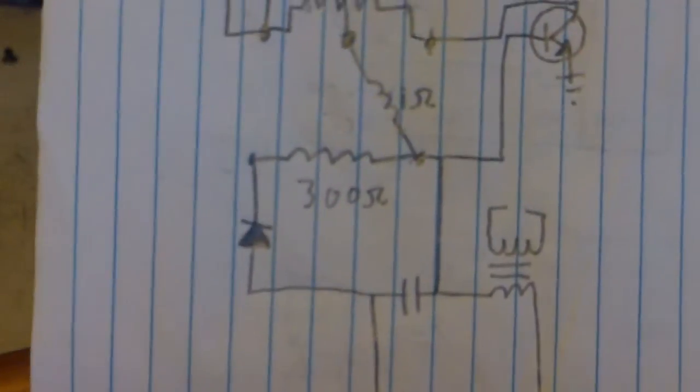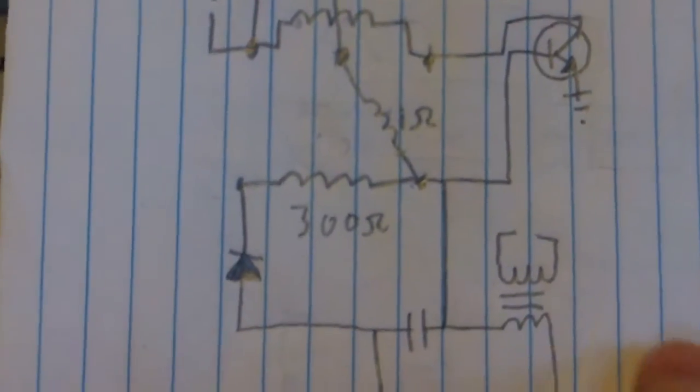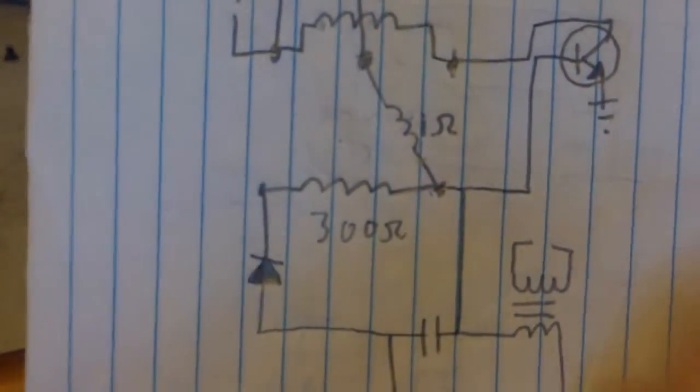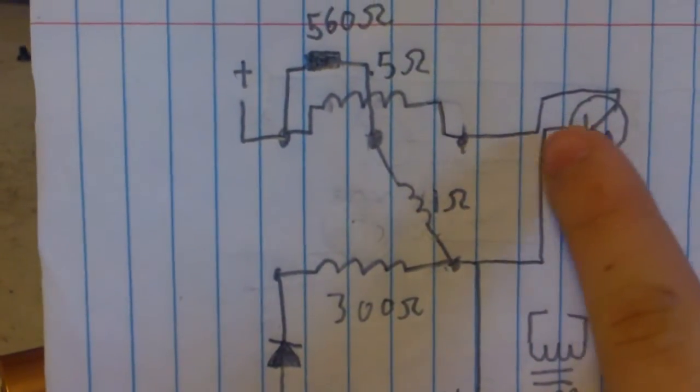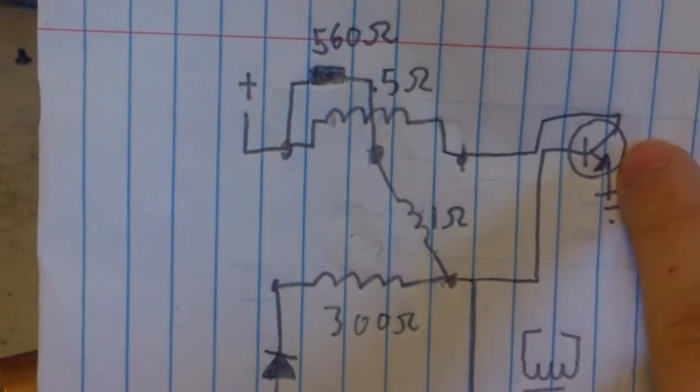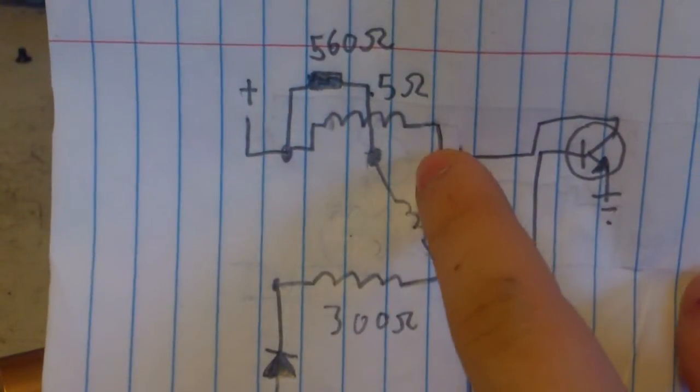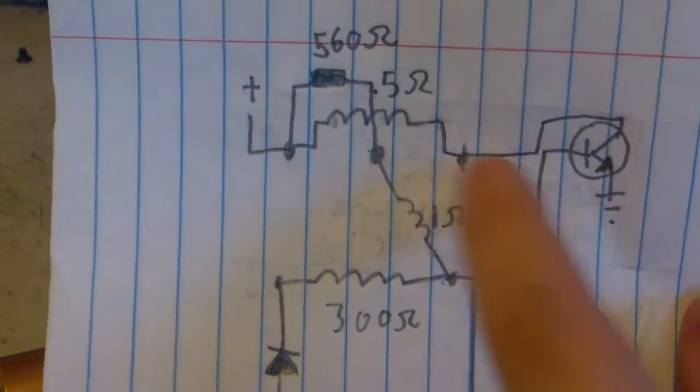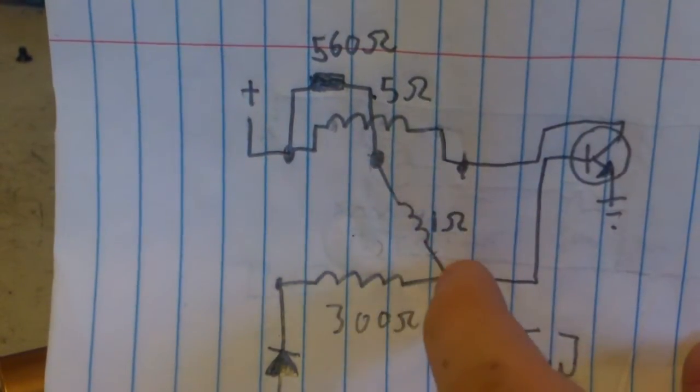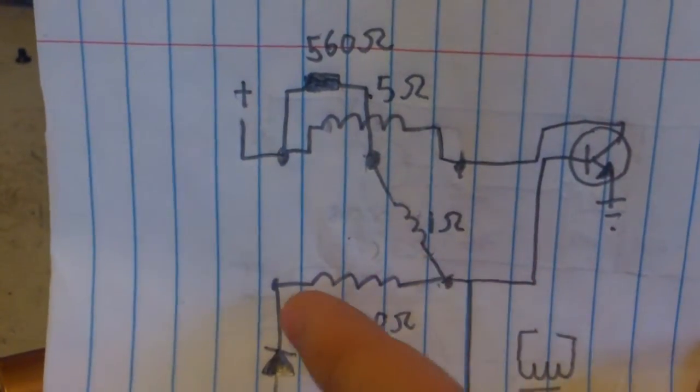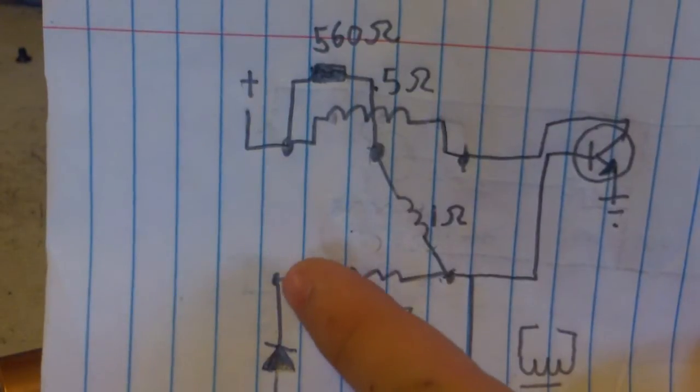So when I took the camera apart, I took out the transformer and I measured the resistances, and I found that there were three coils inside. There's one 0.5 ohm primary, a 1 ohm feedback, and a 300 ohm secondary.